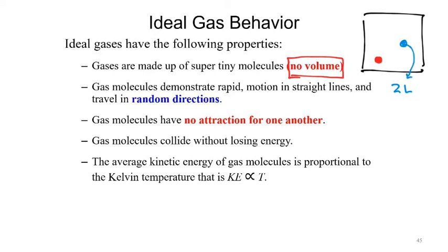Except that for ideal gases, we say they don't have a volume, which means the next particle added has the exact same access to space as the first one had. On a larger scale — when someone walks into a classroom, the volume decreases for the next person. But with gas, because particles are constantly moving and at such low density, we make the approximation that the volume accessible to gas particles stays constant regardless of how many are added.